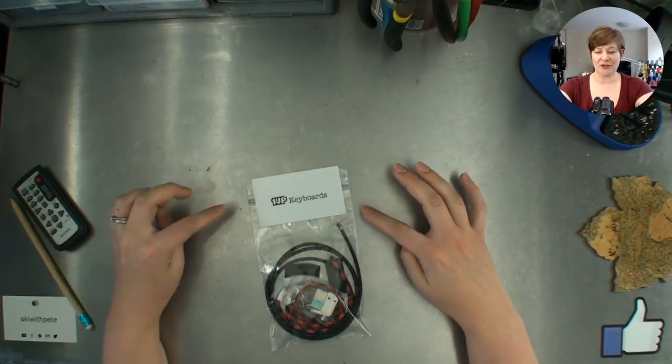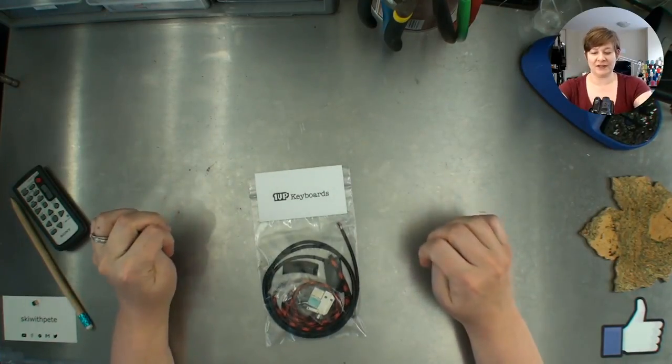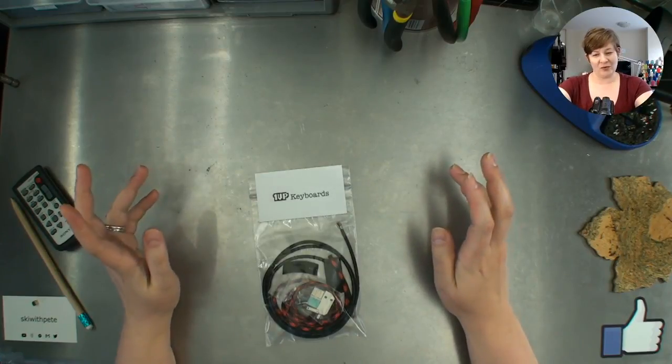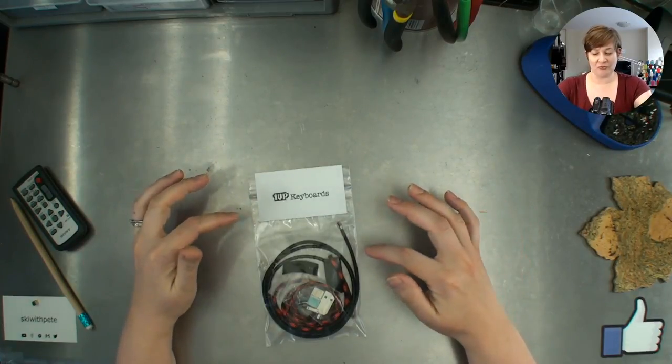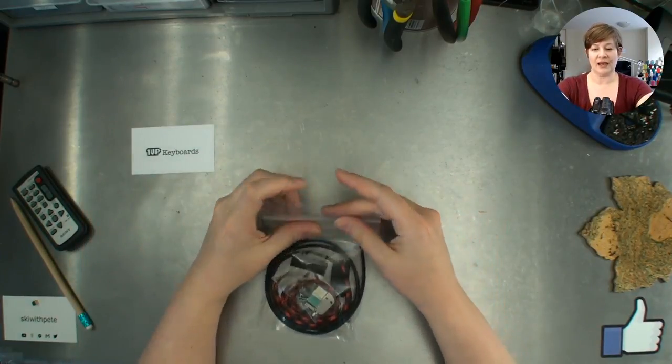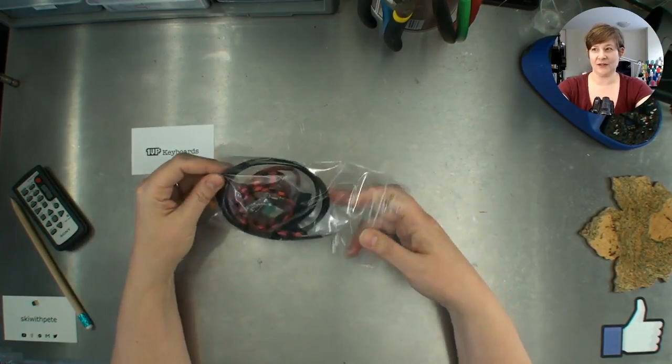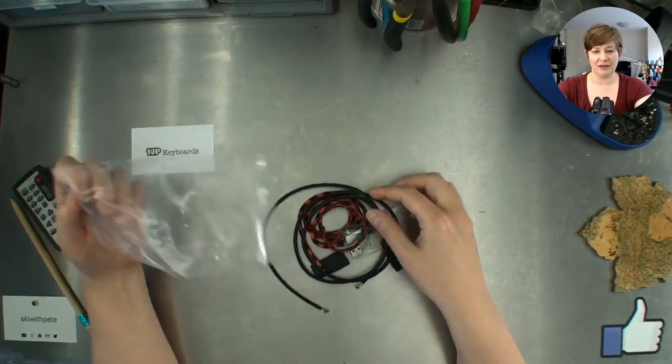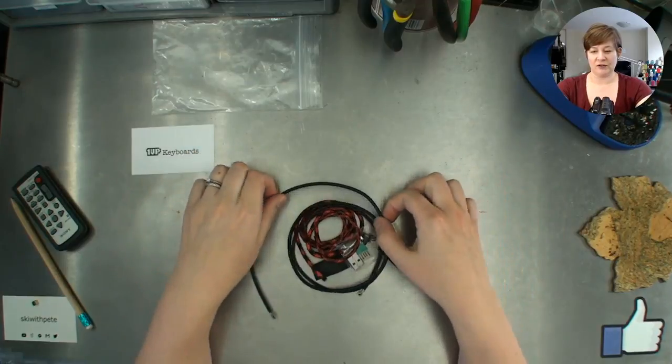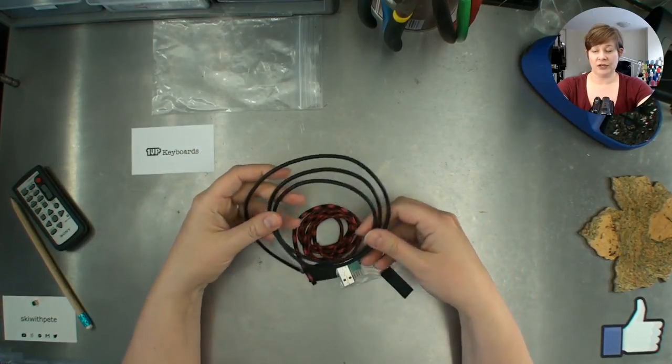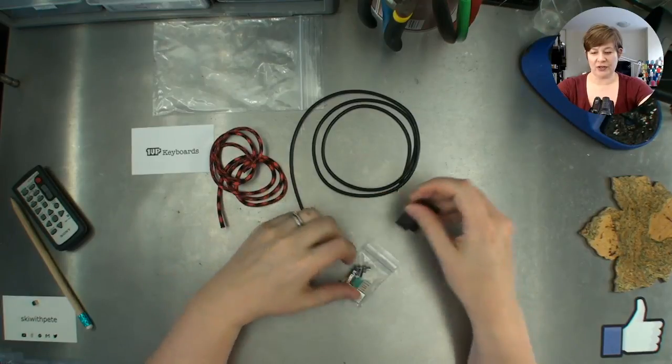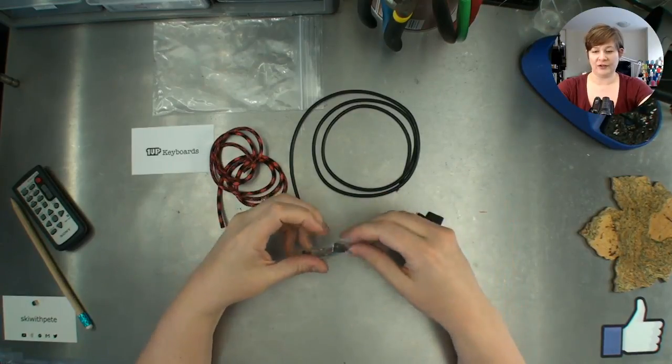I'm going to be making one of the 1UP Keyboards DIY No Solder USB Cable Kits. This is a micro one, so it's a snap together version. This is everything that comes in the bag. You'll have selected all the components that you want: your cable, your paracord, your heat shrink, and your little connector pieces.